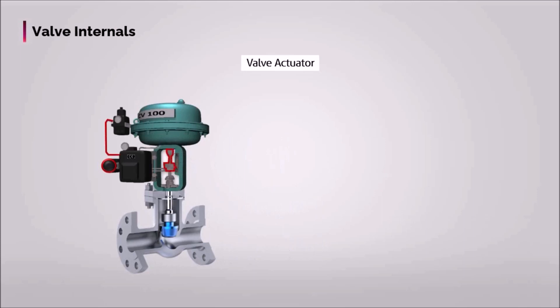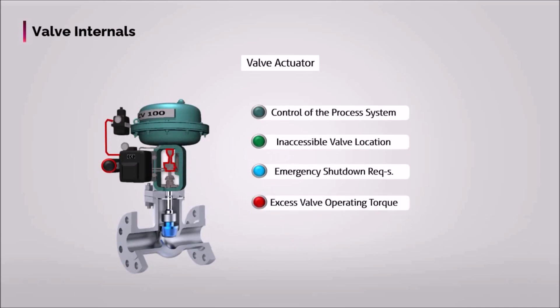The decision for actuating a valve will be made due to one or more of the following reasons: control of process system, inaccessibility or remote valve location, emergency shutdown or fail-safe requirements, excessive valve operating torque and safety.